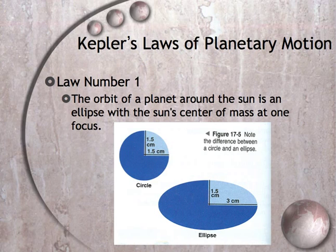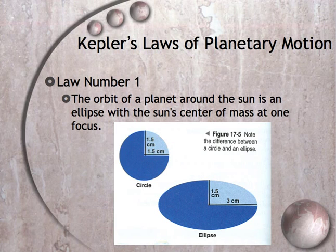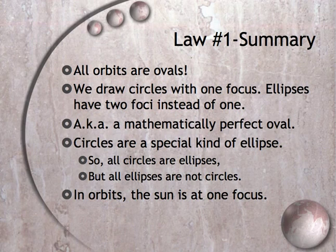So week one notes — what do we need to know? Kepler's Law number one: the orbits of planets are ovals. There are planets, comets, whatever — it is always an oval shape. The fancy word for that is ellipse. A circle is a special kind of ellipse: all circles are ellipses, but all ellipses are not circles, so it's better to just write ovals.